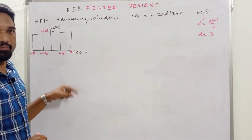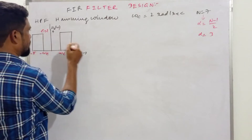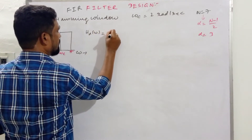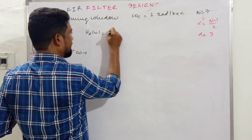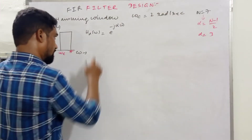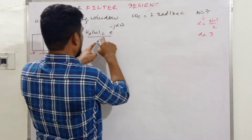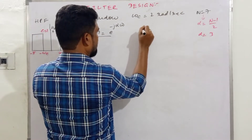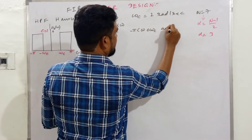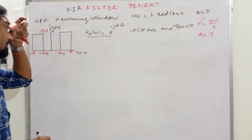The mathematical representation of the desired frequency response H_D(ω) equals e^(−jαω) when the magnitude is 1, valid for ω between −π to −Ω_c and between Ω_c to π. The alpha value computed earlier is plugged in here.